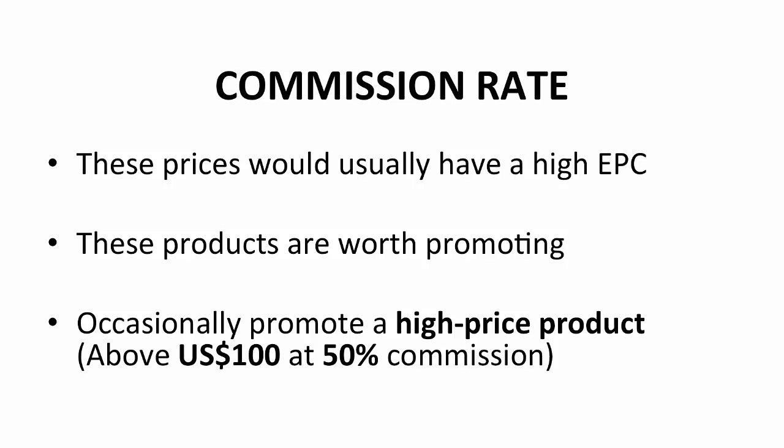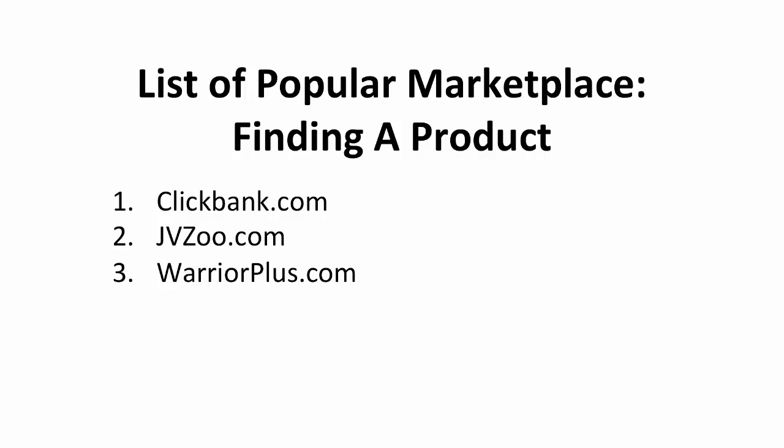If you do find products that offer commission at the mentioned prices and also fit the criteria I listed, go for it and promote the products. Occasionally, promote a high-priced product. A high-priced product is $100 and above. You will usually get 50% commission for these products, but it's not recommended to do it all the time — it doesn't generate sales, and not many are interested in a high-priced product. If you keep pushing for a high-priced product, your subscribers might get tired of you.